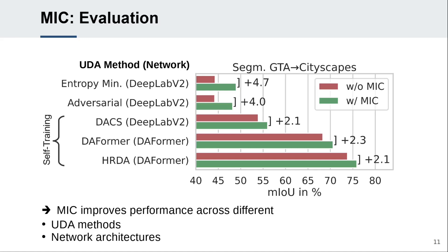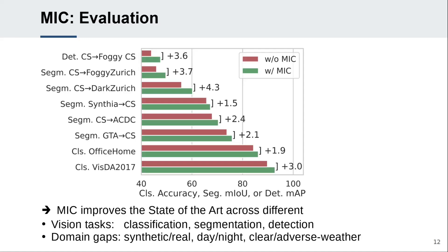It consistently increases the UDA performance by significant margins of more than two mIoU on GTA to Cityscapes. Further, MIC can be used for UDA across different semantic perception tasks, including image classification, semantic segmentation and object detection. It can bridge typical domain gaps, such as synthetic to real, day to night, and clear to adverse weather. MIC sets a new state-of-the-art performance on eight benchmarks with significant improvements over previous methods, by 1.9 up to 4.3 percentage points.